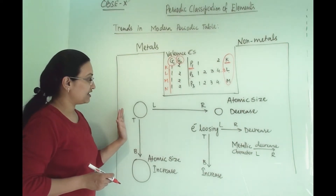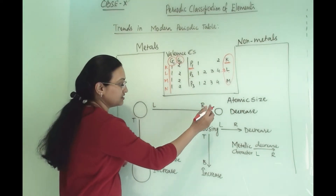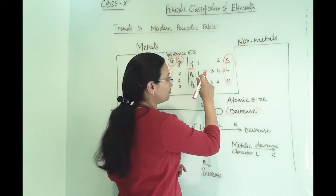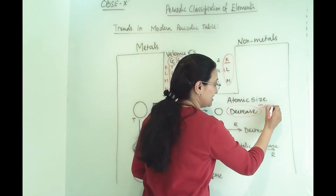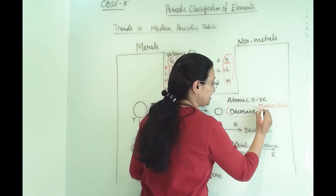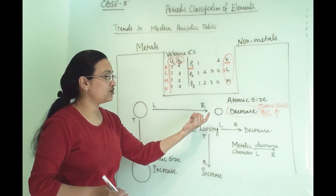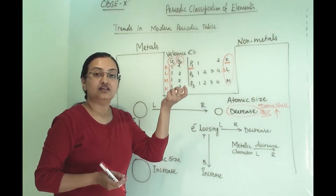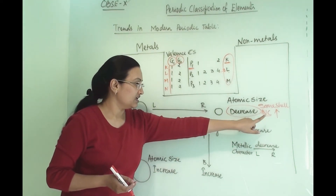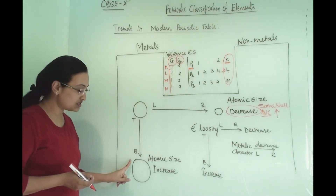Now moving to atomic size. From left to right, the atomic size will decrease. Why will it decrease? Because one electron is being added in the same shell, and the nuclear charge — I am writing here Nc — the nuclear charge will increase. So the electrons are being pulled towards the nucleus, and that is why the atomic size will decrease.